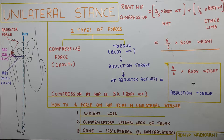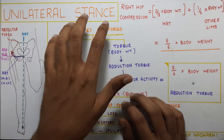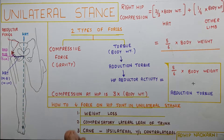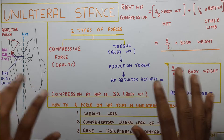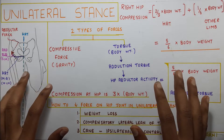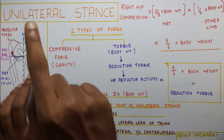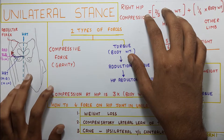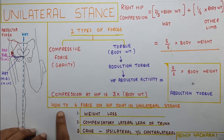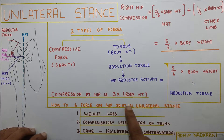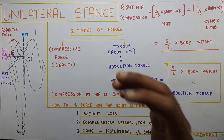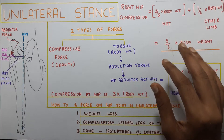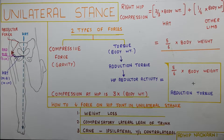In this video we are going to talk about the unilateral stance of the hip joint. The last video was about the bilateral stance where we got the basics right. Now in this video we will be talking about the unilateral stance, how the force is distributed, and then we will see how to reduce the force in the hip joint in unilateral stance — the different techniques and which is the best.